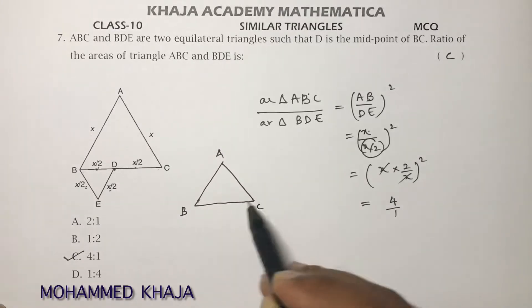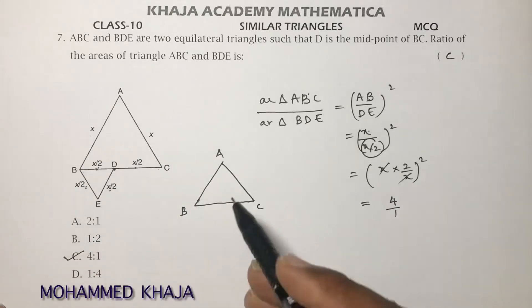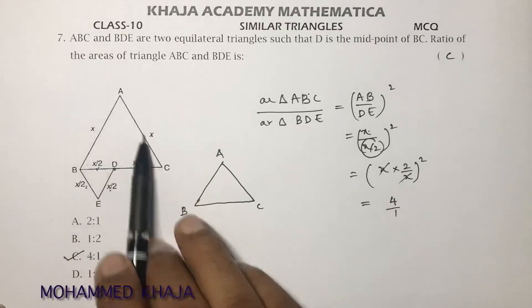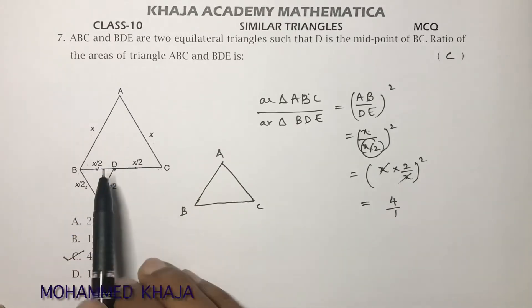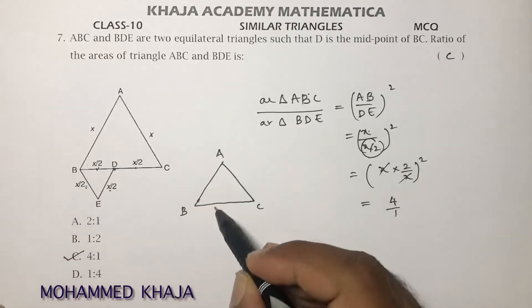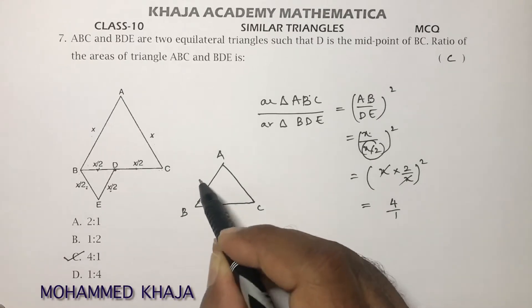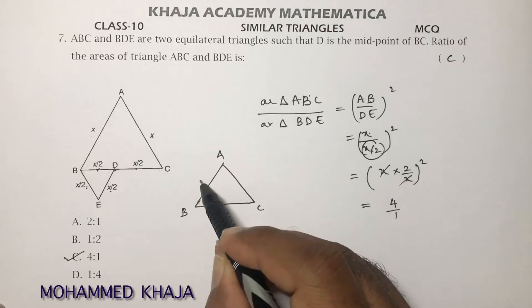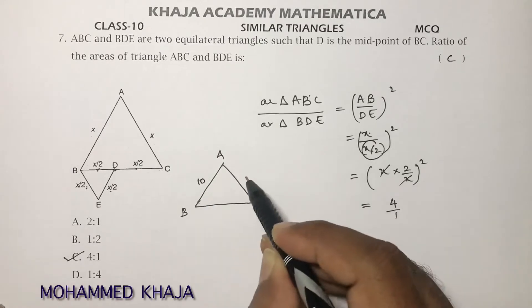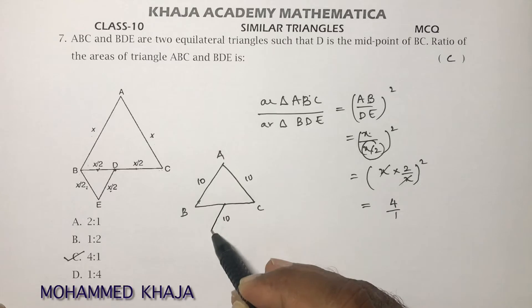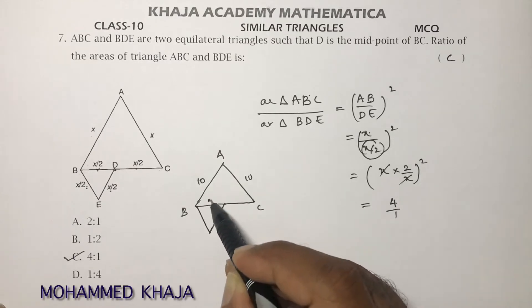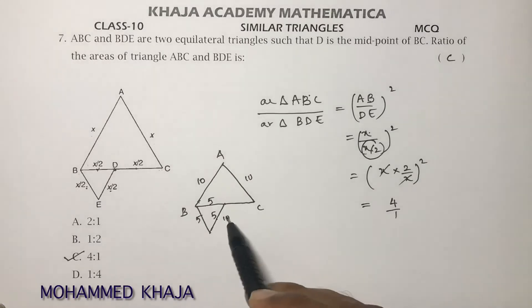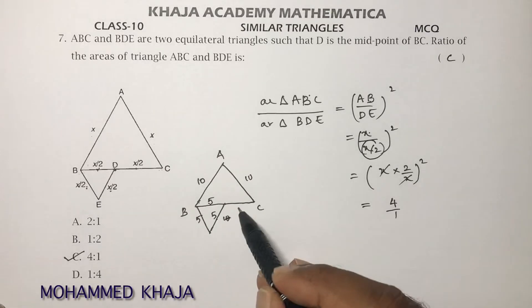For MCQ problems, you can use a numerical value instead of X. For example, take the side of triangle ABC as 10. Then the side of triangle BDE, being half of that, is 5. So the sides become 10 and 5 respectively.